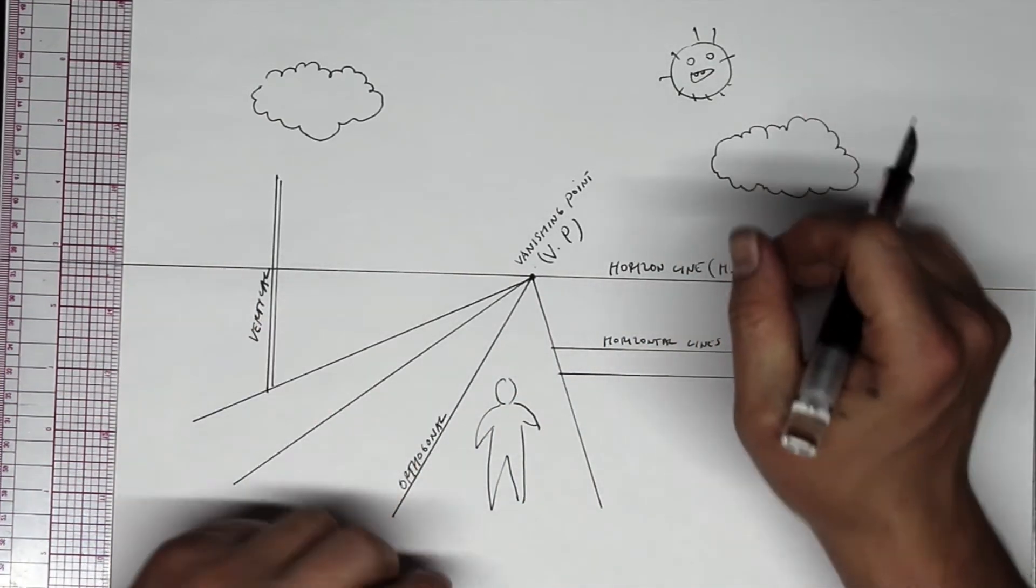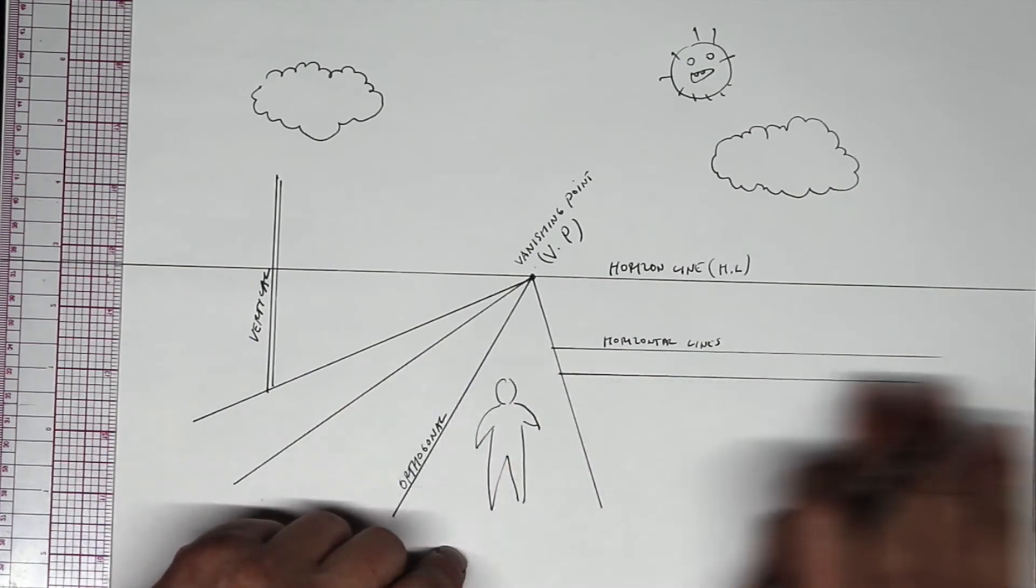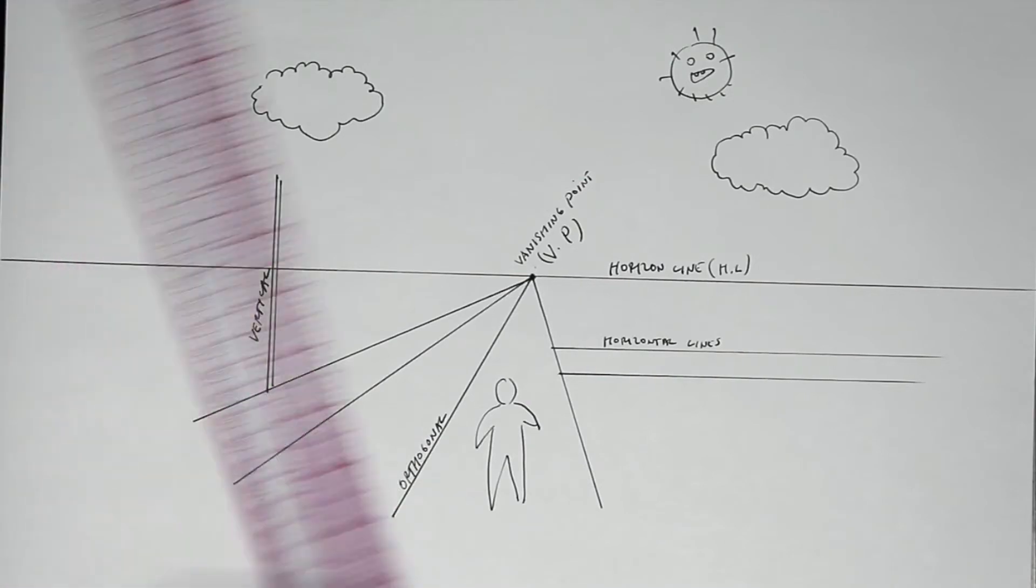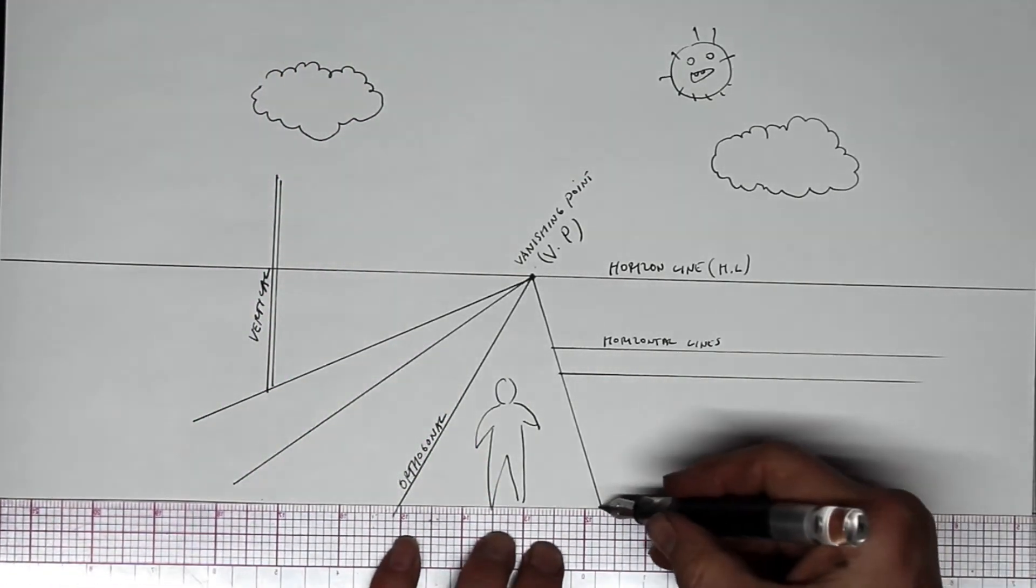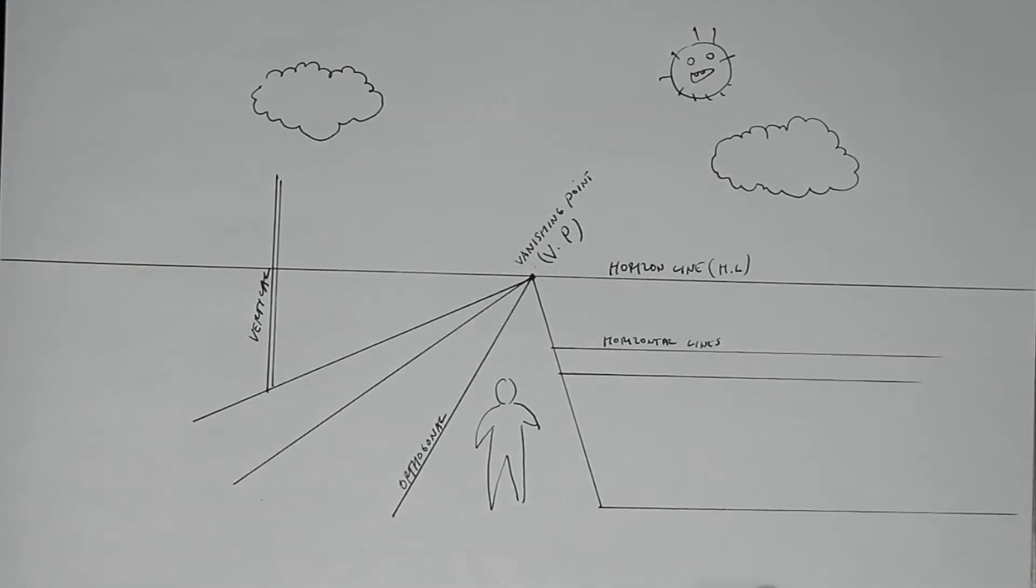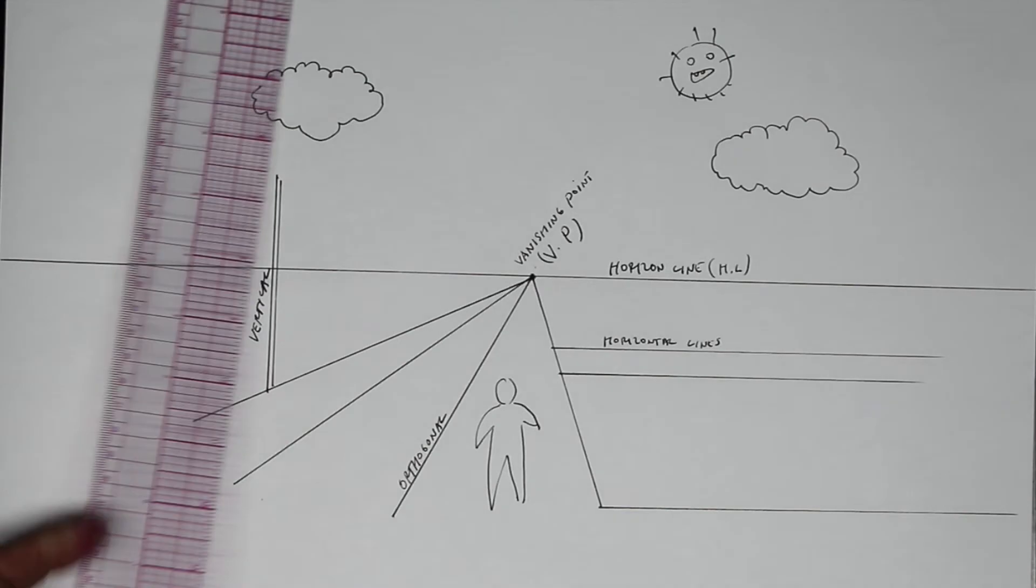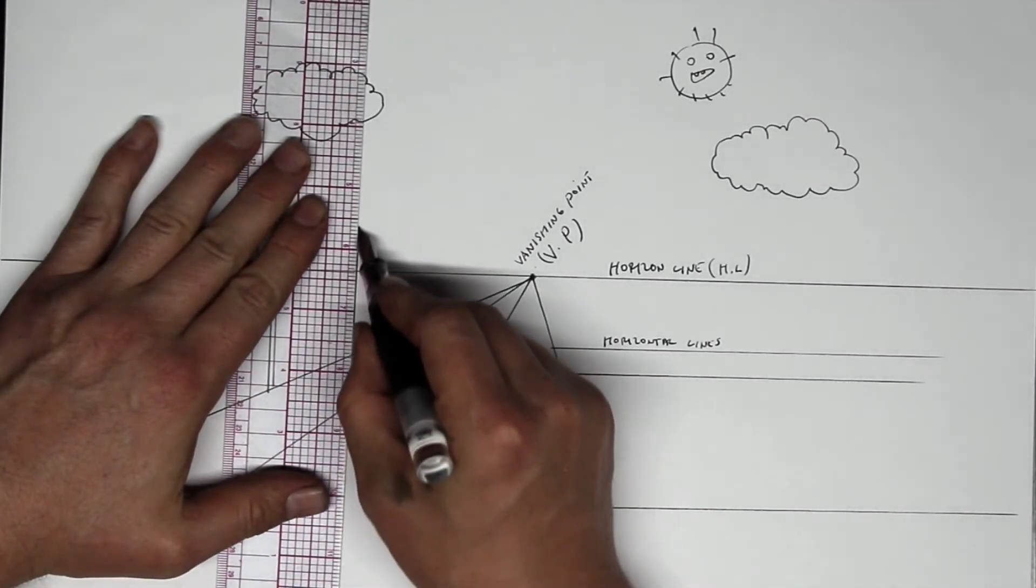In one point perspective, all horizontal lines regardless of where they are are going to be parallel to each other. They're never going to touch. So if we have another horizontal line, let's say another intersection here, that horizontal line is going to be parallel to these horizontal lines. If we have a second vertical line, let's say a second telephone pole going back in space here.